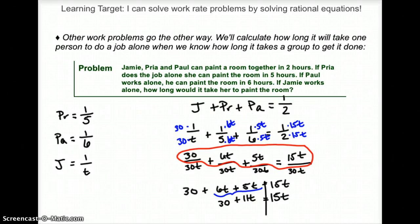So I would have 30 plus 11T will equal 15T. Now I need to get my T's on the same side, so I'm going to subtract this 11T.